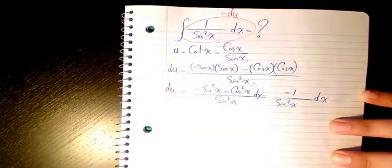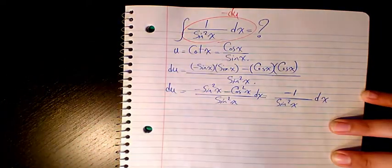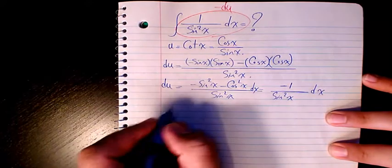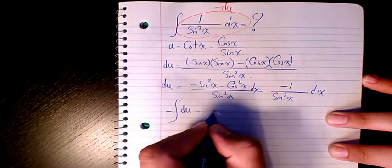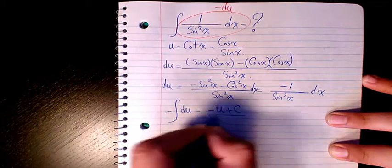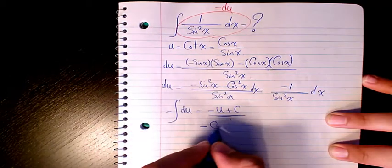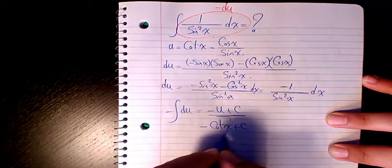So the whole thing is gonna change to negative integral of du, which equals negative u plus c. Since u is cotangent x, the final answer is negative cotangent x plus c.